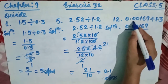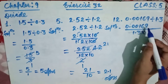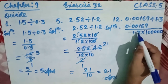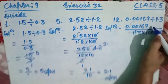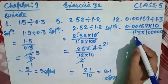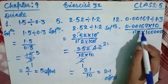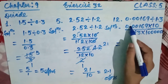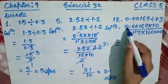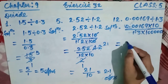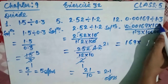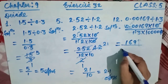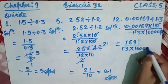To remove the decimal from the numerator, count 5 digits after decimal — write 100000 (1 followed by 5 zeros) in the denominator. To remove the decimal from the denominator, count 1 digit — write 10 in the numerator. The leading zeros before 169 have no value, so the numerator simplifies to 169.